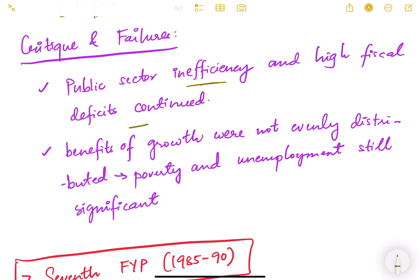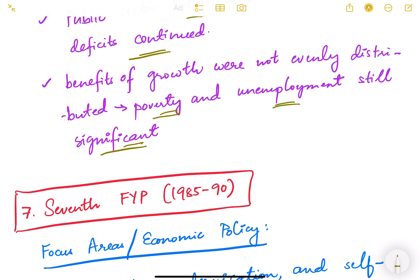There are obviously some critiques and failures. Public sector inefficiency and high fiscal deficit continued — there was a lot of spending on various schemes so we could not control our fiscal deficit. The benefits of growth were not evenly distributed, and poverty and unemployment remained significant. Although poverty alleviation was an important agenda, poverty and unemployment still remained. These are chronic problems in our system — not a recent phenomenon — and it has been a very challenging task to increase employment and reduce poverty.